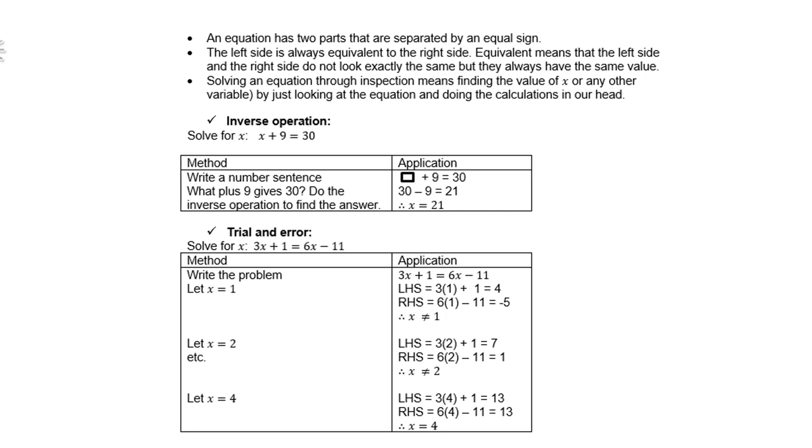Inverse operations: for instance, solve for x, x plus 9 equals 30. What we do is write a number sentence, like a little square plus 9 equals 30. Of course, 30 minus 9 is 21, so therefore x is 21, because 21 plus 9 is 30.